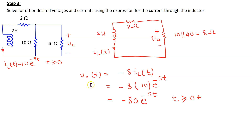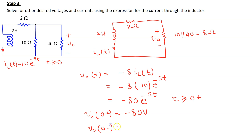If we substitute 0 in this expression, V output(0 plus) is equal to minus 80 volts. Also, V output(0 minus) is equal to 0 volts, and this comes from analyzing the circuit before switching takes place.